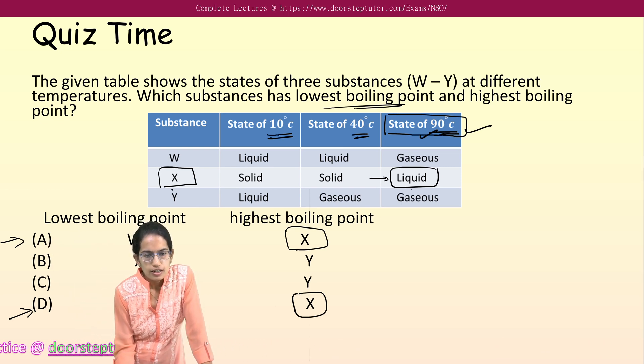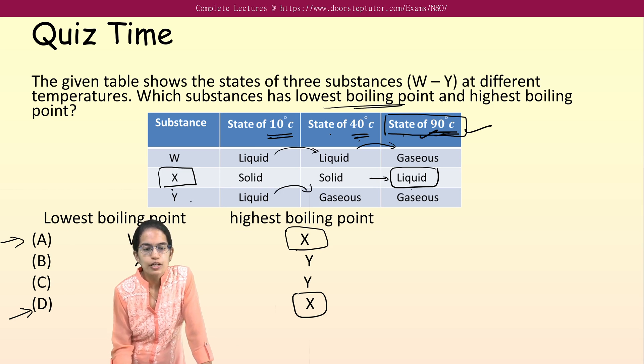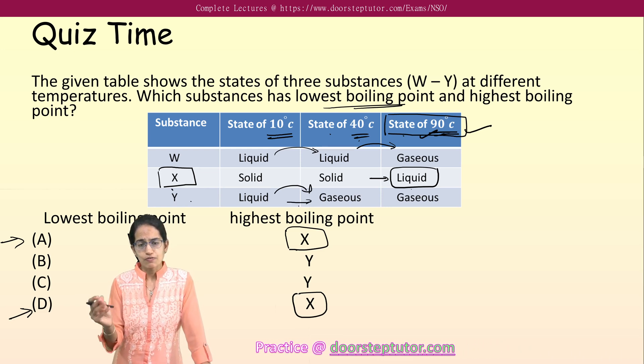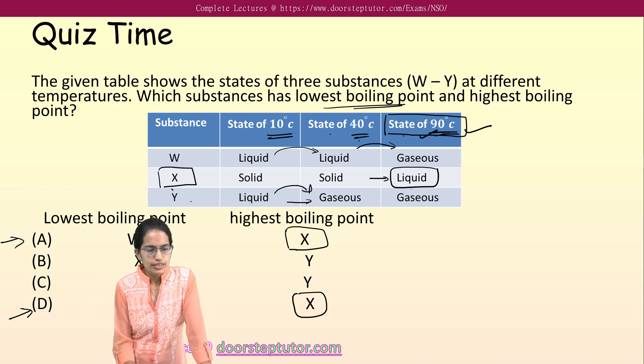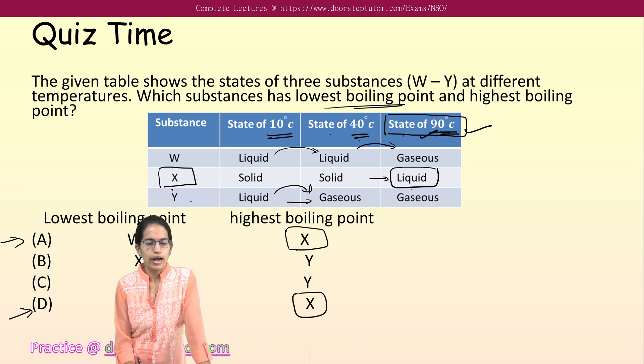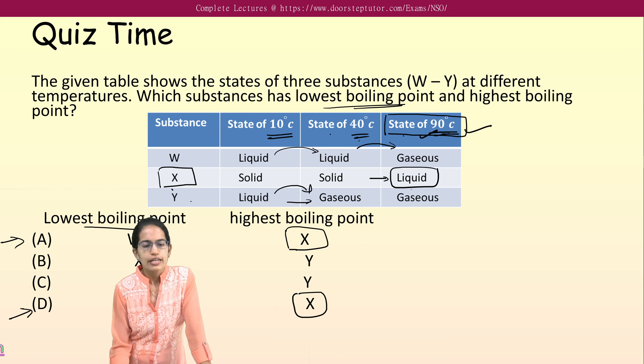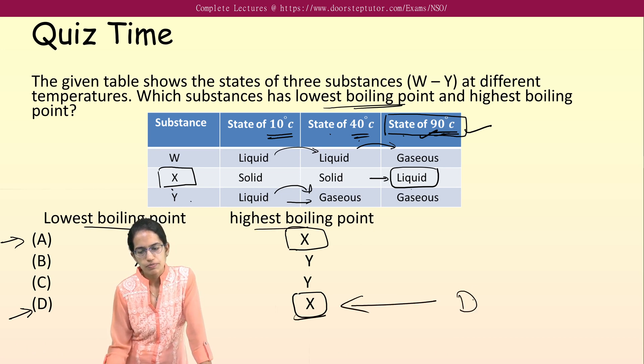So here from 10 to 40, it's liquid to liquid, and from 40 to 90 then it would become gas, so it's not that quick. But here Y, from 10 to 40 only turns into gaseous state. That means it quickly turns into gaseous state with a little heat. So what is Y? It is Y here. The lowest boiling point would be for Y, the highest boiling point would be for X. So the correct answer here would be D.